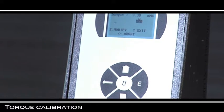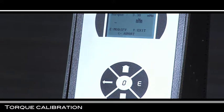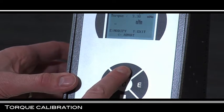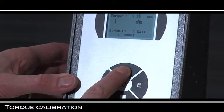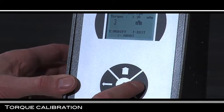For modifying the value, press E and enter the value read on the balance with the upper and lower arrows on the keyboard of the RM then confirm with E.